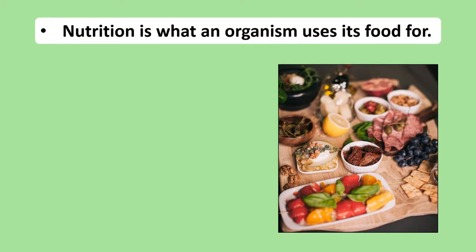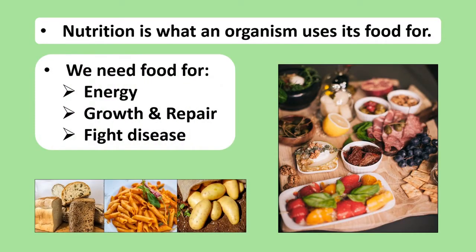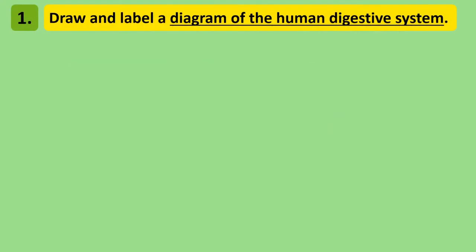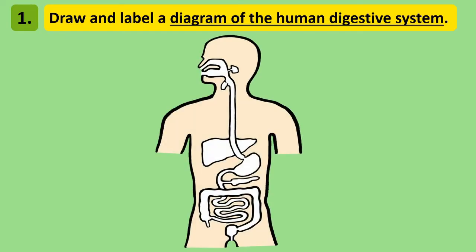In our video on the food topic, we learned that nutrition is what a living thing uses its food for, and that the reason we eat food is to obtain energy, grow and repair our cells, and to fight off illness. So what does our body do to food to make these things happen? Well, food we eat is brought through a system of organs that work together to allow us to get nutrition from our food. This system of organs is called the digestive system.